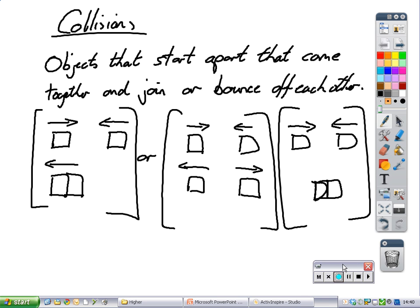Right, okay, so, a collision. Objects that start apart, then come together and join or bounce off each other. You start as the first one here, there are two objects that are coming together, and then they move off in one direction together, it could be to the left or to the right.